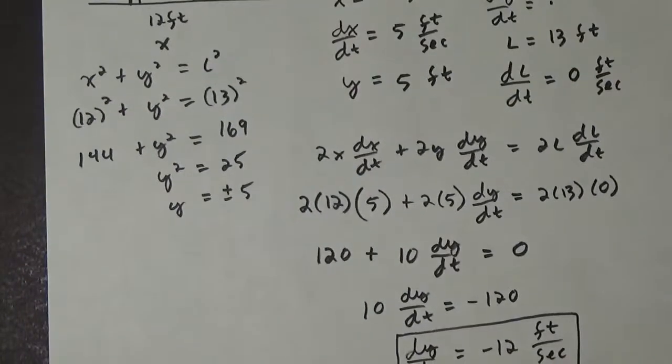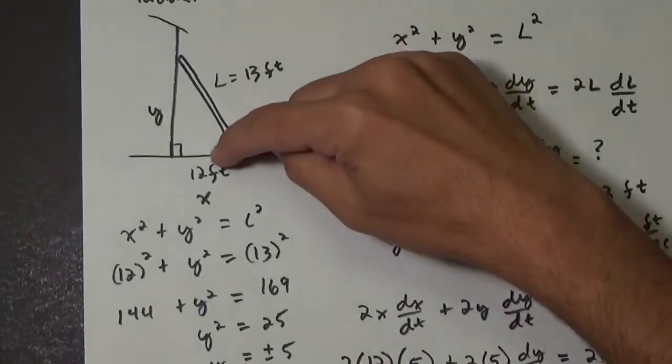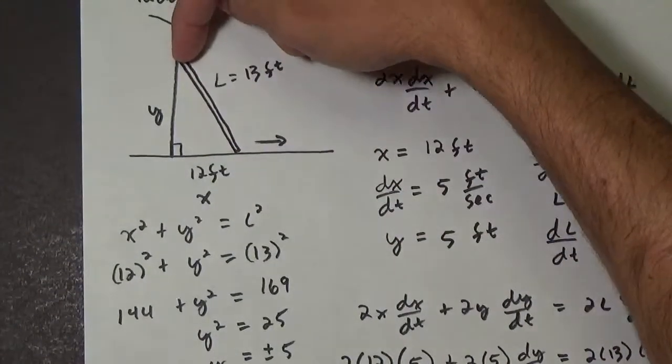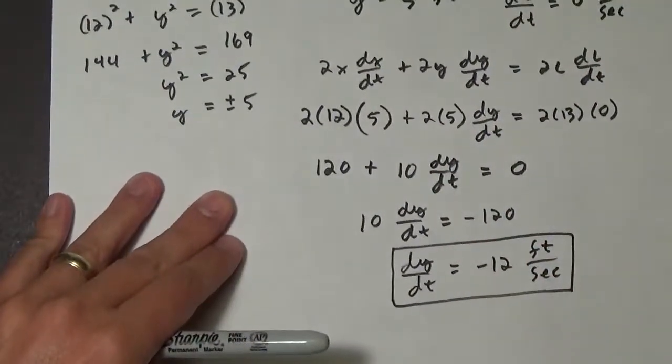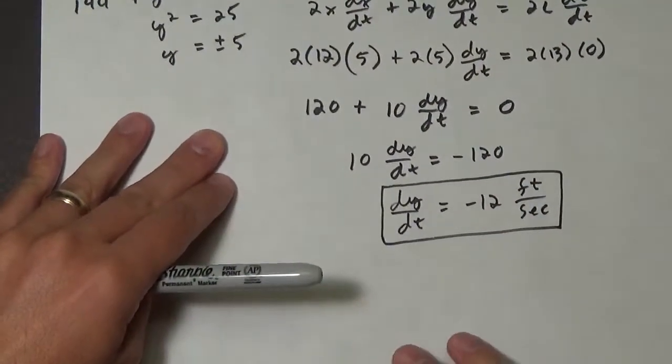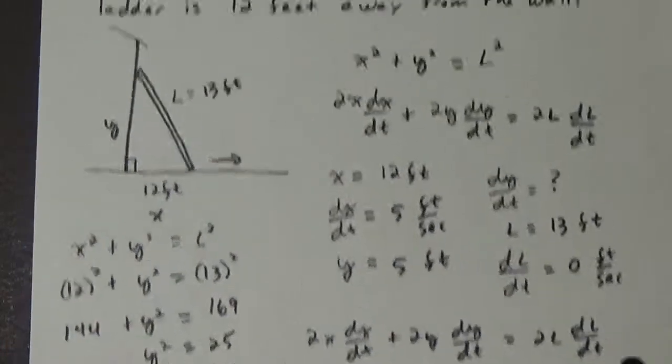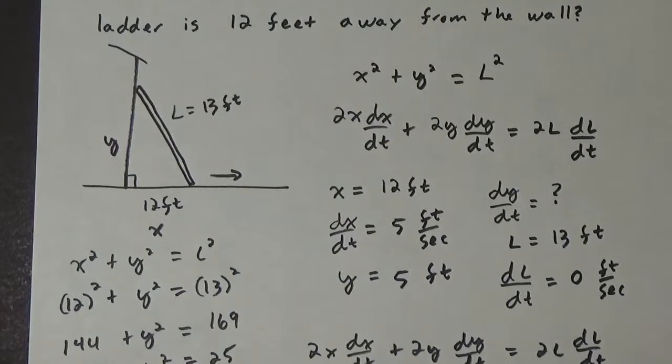Well, that answer makes sense because if I'm pulling this ladder out, the top of this ladder is falling down. So that's what the negative is for. So there we go. There's our first related rate of change problem.